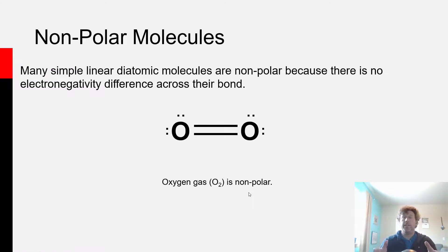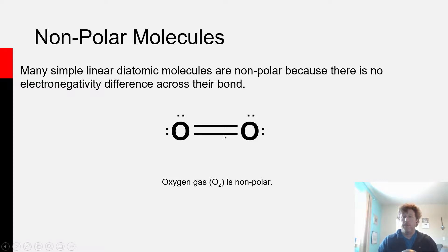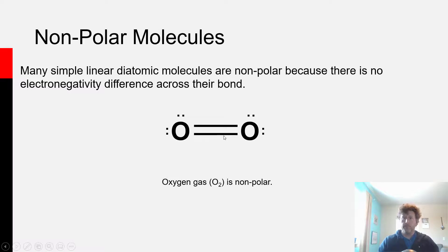You can also make quick determinations as to whether a molecule is not going to be polar. For instance, if you have a homonuclear diatomic like dioxygen or dinitrogen, there's only one bond in the molecule — in this case a double bond in dioxygen. There's no electronegativity difference in the bond, so the bond is nonpolar. And if your molecule has only nonpolar bonds, it can't be a polar molecule, because there's no polarity to any of the bonds.